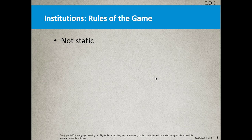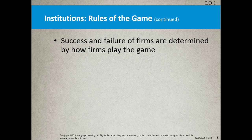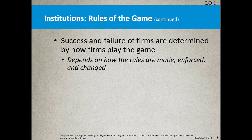Nothing is static when it comes to the rules of the game. There's something called institutional transition — fundamental, comprehensive change introduced to the formal and informal rules of the game. For a company, an MNC, the fact that these things are dynamic affects how you adapt. Success and failure of firms is determined by how firms play the game — 'when in Rome, do as the Romans.' It depends on how rules are made, enforced, and changed. If you can't rely on the institution, you have to go outside of it.